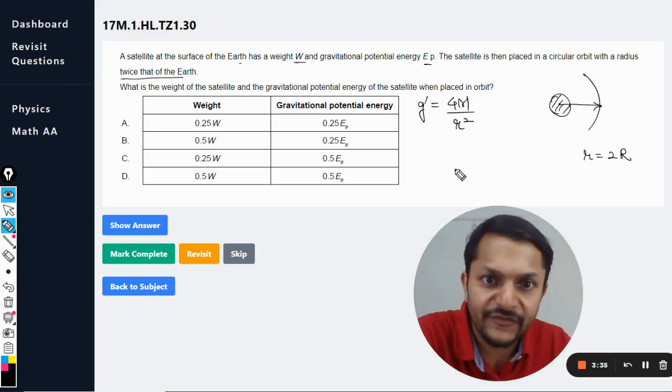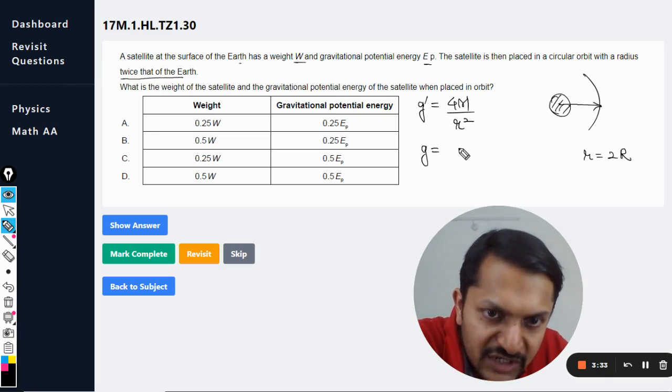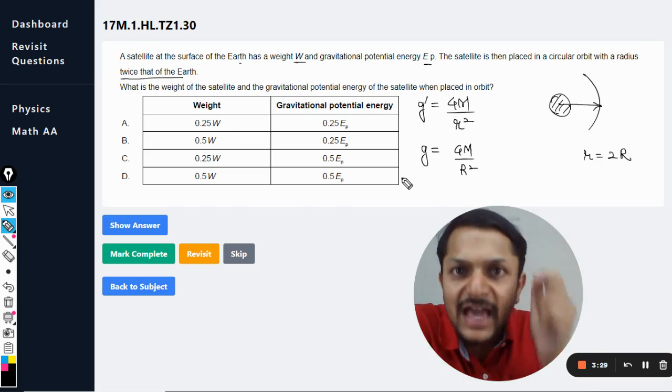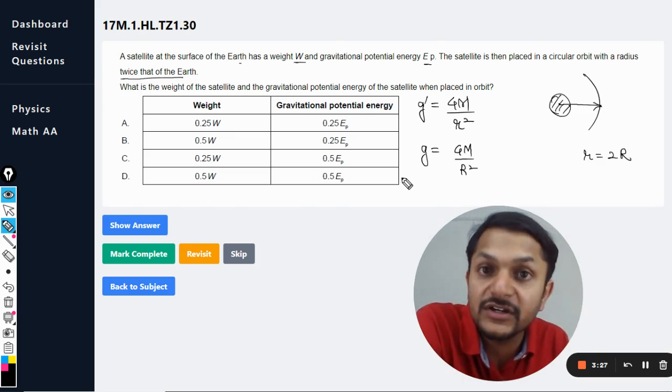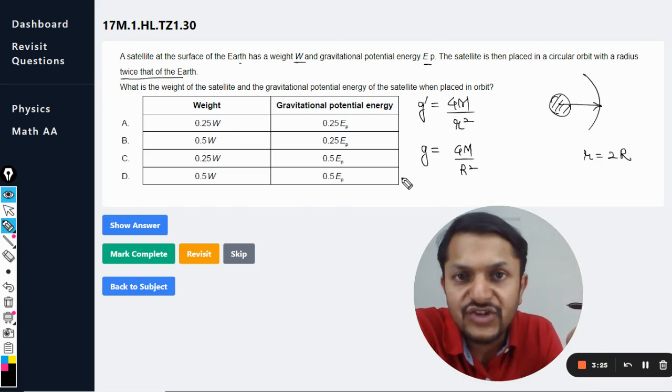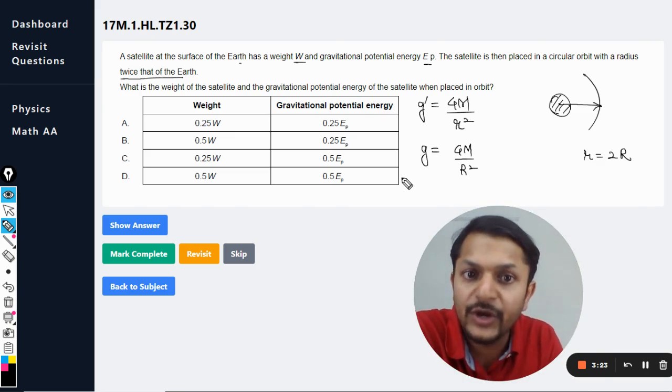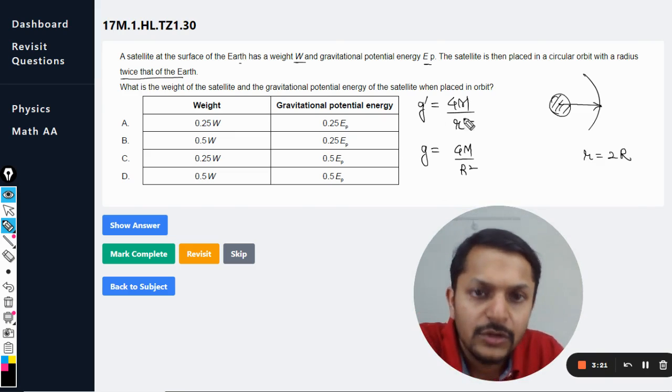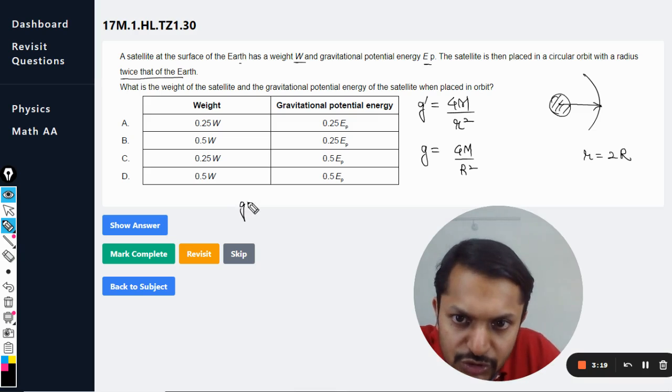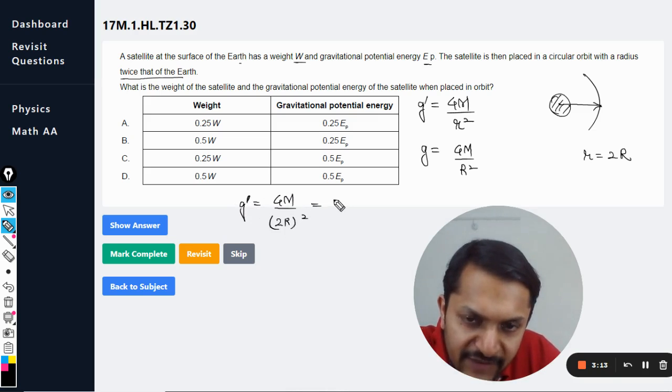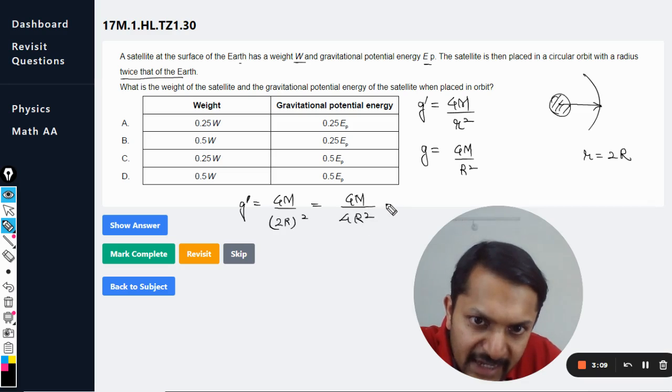Normal g, which is GM divided by capital R square, that is the acceleration due to gravity at the surface of the earth which is 9.8, is given by GM by capital R square. Now we are going to compare these two. So g dash is GM and this is 2R square.